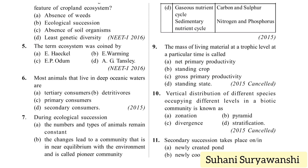Most animals that live in deep oceanic waters are: tertiary consumers, detritivores, primary consumers, or secondary consumers. Deep oceanic waters — the answer is detritivores.